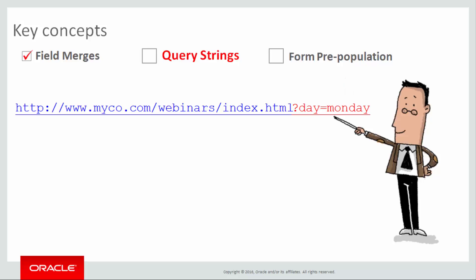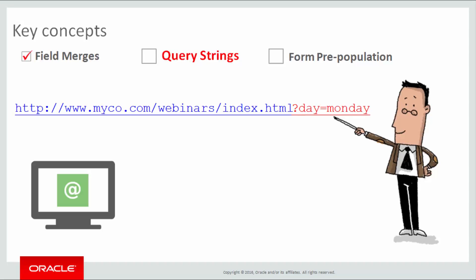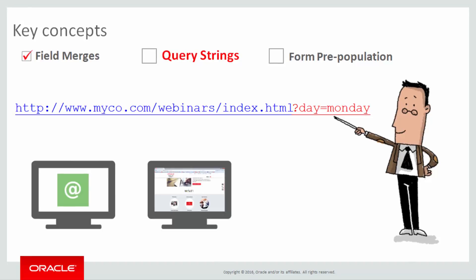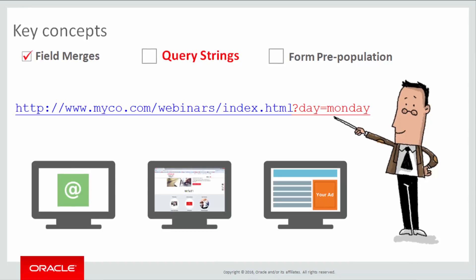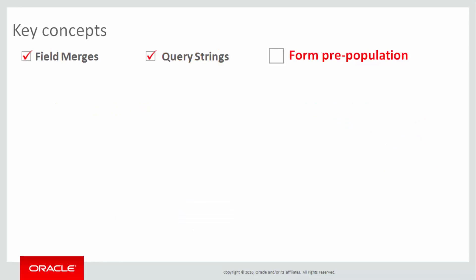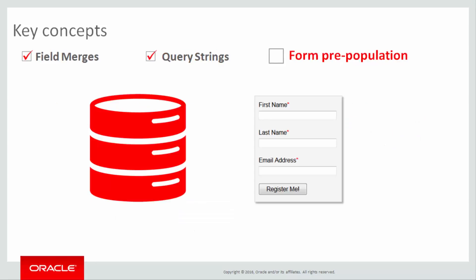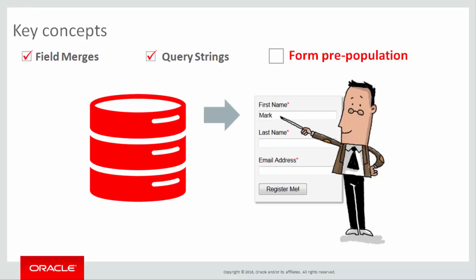You can add query strings to any hyperlink you create, whether it's in a campaign email, on a website, or even a display ad. The last concept is form pre-population, which refers to automatically filling in web form fields with data if that data is available to Eloqua.